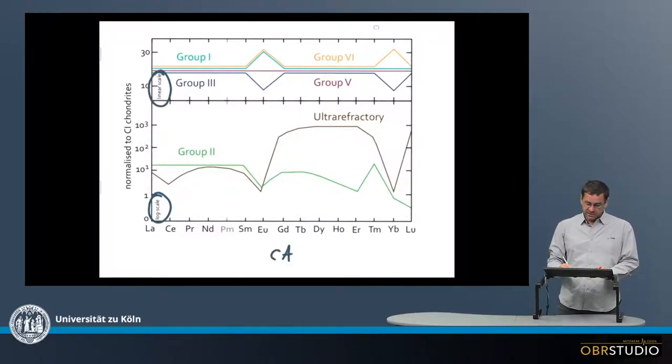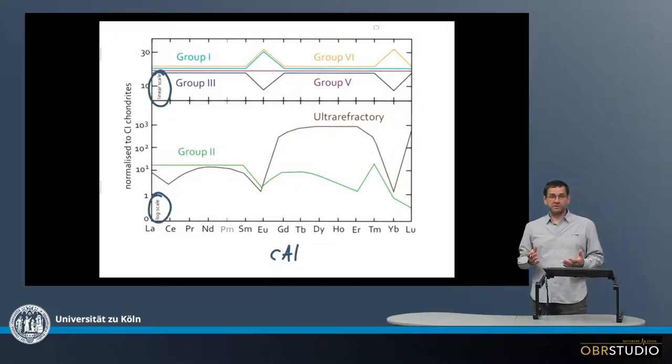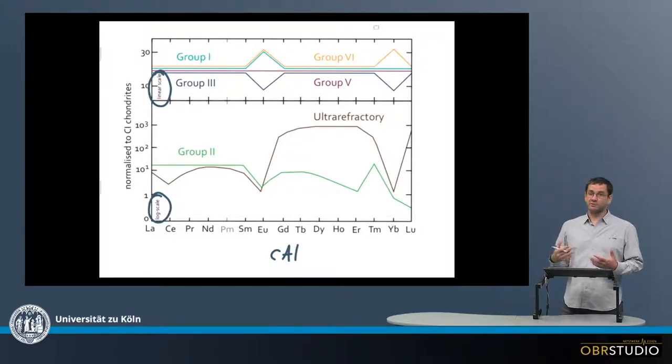Just as a refresher, CAIs are a minor component in most chondrites. In ordinary chondrites, they are rare, maybe almost down to zero volume percent. In carbonaceous chondrites, they are more abundant, with the highest abundance in CV chondrites, maybe three to four volume percent.